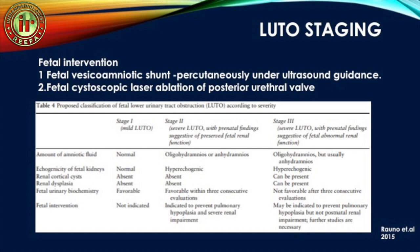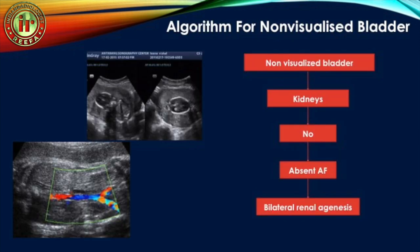In stage two, there is severe LUTO but the parameters — amniotic fluid, echogenicity, etc. — suggest renal function is preserved. Fetal intervention in this stage has a high chance of avoiding severe renal impairment. In stage three, parameters already suggest significant abnormal fetal renal function, and intervention can be indicated primarily to prevent pulmonary hypoplasia but not postnatal renal impairment.